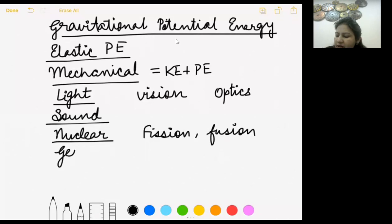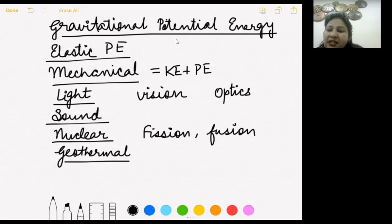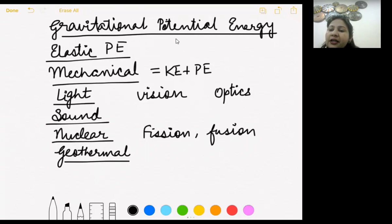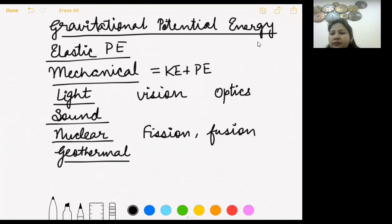Geothermal energy — 'geo' means earth and 'thermal' means heat. The earth's core is very hot, so the heat present inside the earth in its core is called geothermal energy. It is the energy possessed by the earth due to the heat inside it.